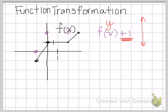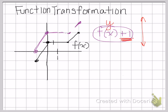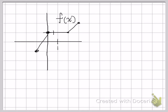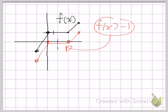I'm going to take all these points, shift them up one, and that resulting purple graph is going to be f of x plus one. The black graph is f of x that was given, and the purple graph is f of x plus one — the shift up of one. Now if I take f of x minus one, that's going to be a shift down, so we'll move all the points down one unit and connect the dots.